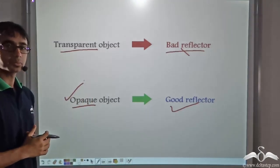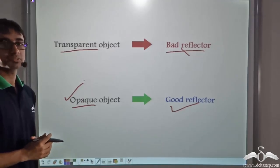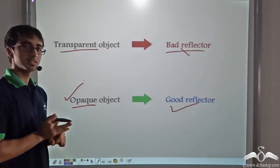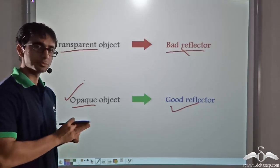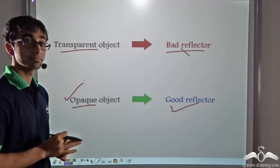So what are the conditions that we learnt so far? That an object must be smooth and it should be opaque to be a good reflector. Do you think there are any other properties that it must satisfy? Let us take a look.